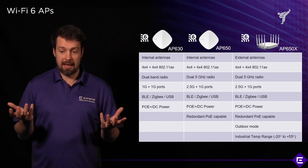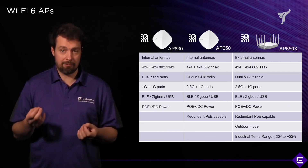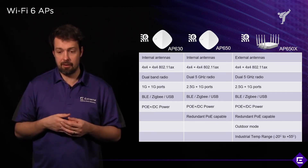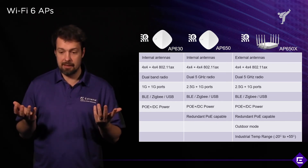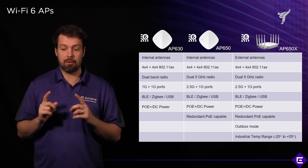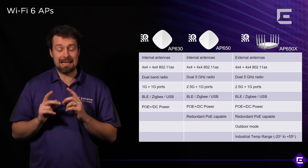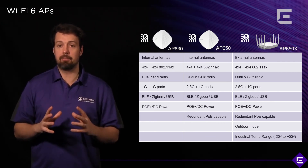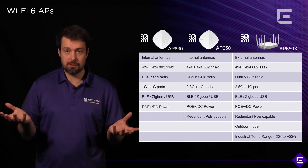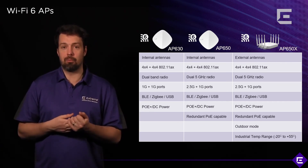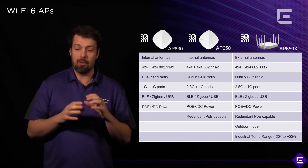Both access points actually have a multi-gig 2.5 gigabit port. The AP510CX also has BLE and an extended temperature range, so it can be deployed in warehouses or NEMA enclosures for more demanding environments. It also has an outdoor mode.